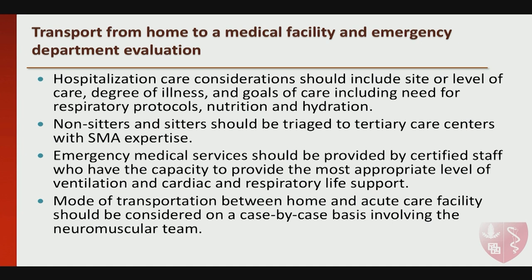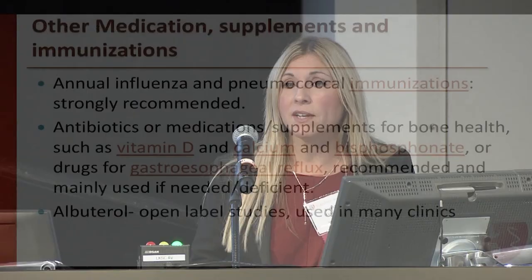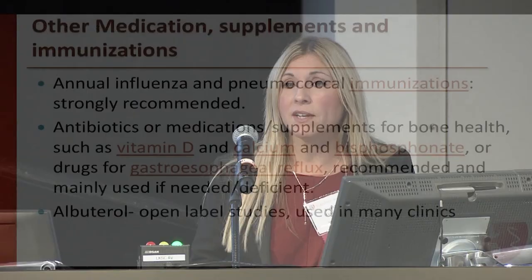Other medication considerations: annual influenza and pneumococcal immunizations are strongly recommended. For bone health, vitamin D and calcium are recommended. There's limited experience with bisphosphonates for early fractures in pediatric SMA clinics, though some centers use them. Previously, studies with salbuterol were negative, but some centers still use oral albuterol — not the inhaled form — because there are few major side effects and some possible muscle function benefit, though the effect remains unclear. Some patients you follow may still be on these supplements or medications.